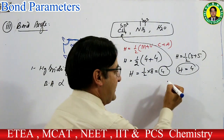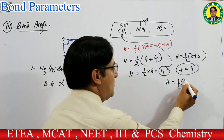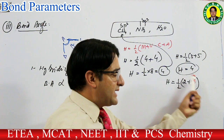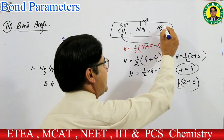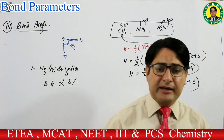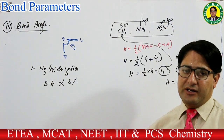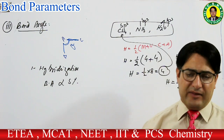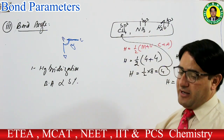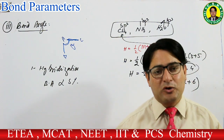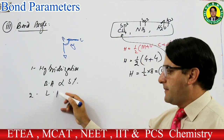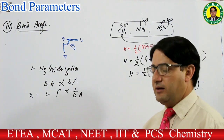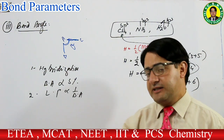Rule number 2: lone pair۔ Lone pair جتنے زیادہ ہوں گے bond angle اتنا کم ہوگا — lone pair اور bond angle کا inverse relation ہے۔ Lone pair = hybrid orbitals − number of bonded atoms۔